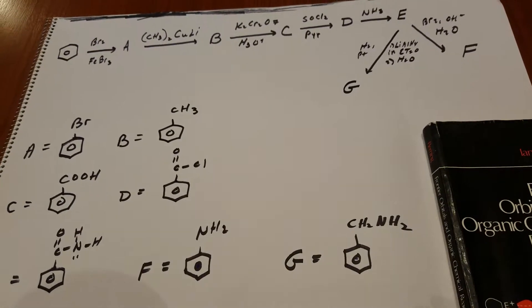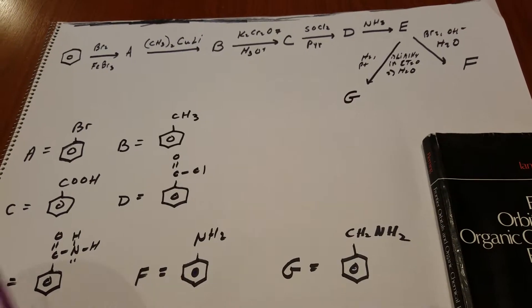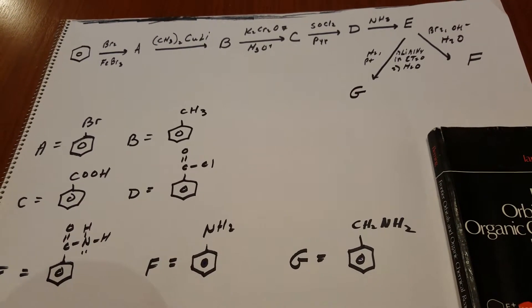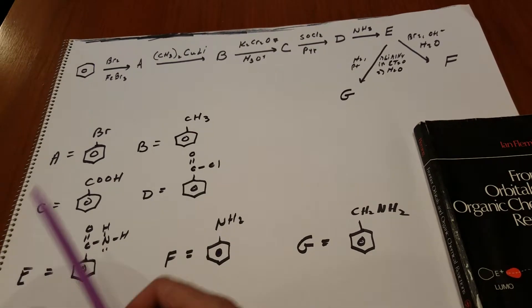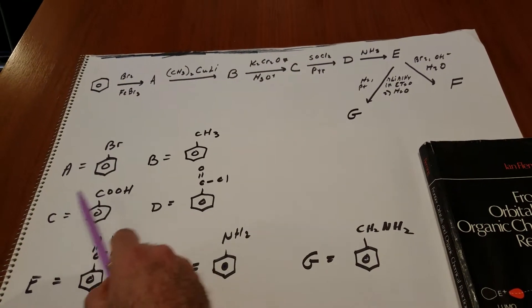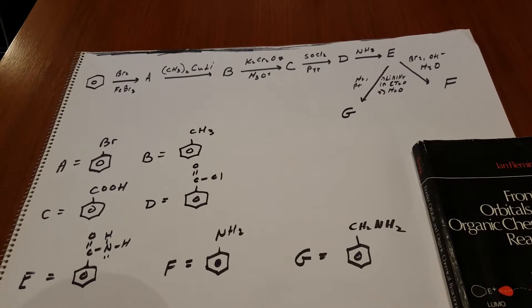Now, from B to C, that's known as side-chain oxidation. Anything made of carbon normally will get blown off the ring, whether it's an ethyl or a methyl or a propyl. And we oxidize it into benzoic acid.